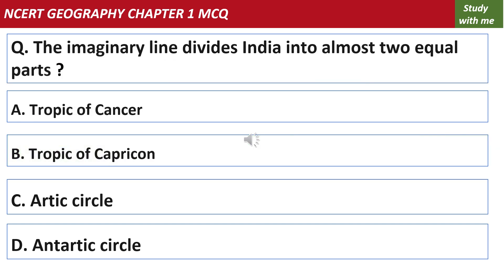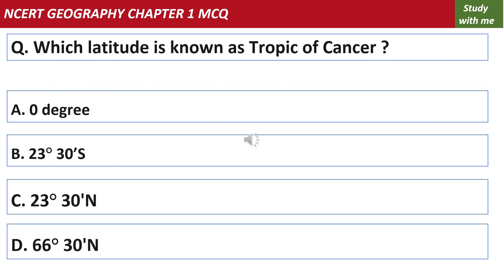An imaginary line divides India into almost two equal parts. The answer is the Tropic of Cancer. Which latitude is known as the Tropic of Cancer? 23 degrees 30 minutes north is the latitude known as the Tropic of Cancer.